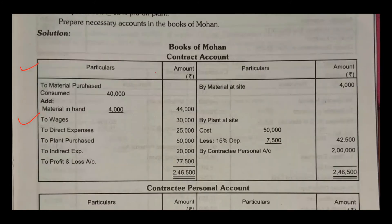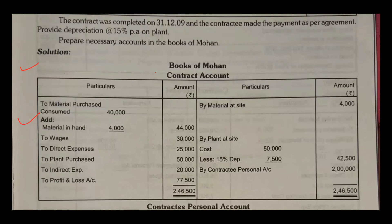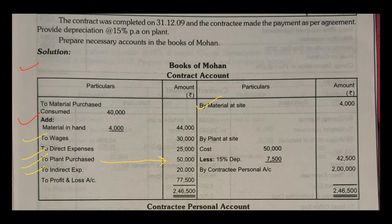Now, direct expenses, plant purchased, and indirect expenses are also given and recorded on the debit side. On the credit side, material at site has been recorded. For the plant purchased during the year, there is no information about it being sold or used up, so you assume that at the end you have a closing stock — and you will record it as plant at site. In the contract account, plant and machinery will show in that account — it is not treated as a fixed asset to be drawn in the balance sheet. For them, it is their material. So plant at site is shown as the closing stock.